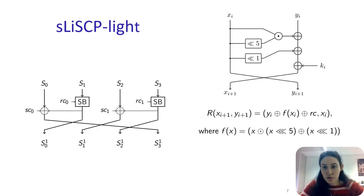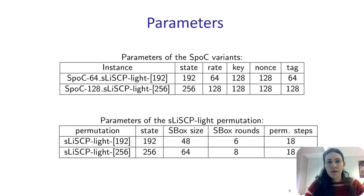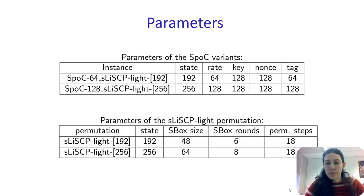The S-box used in the permutation is the Simeck cipher with a constant instead of a key, and the round of the Simeck cipher is shown at the left. For completeness, I am listing the parameters for both SPOC versions and the corresponding permutations. Note that both versions of SPOC use a 128-bit key and nonce, with different rate and tag sizes. For the permutation, we have different sizes of the S-box and different numbers of Simeck rounds, while the permutation steps are the same.